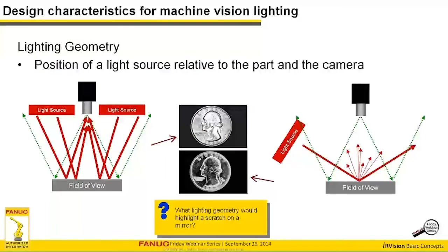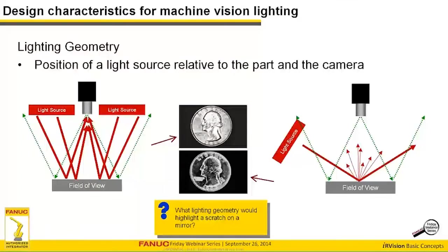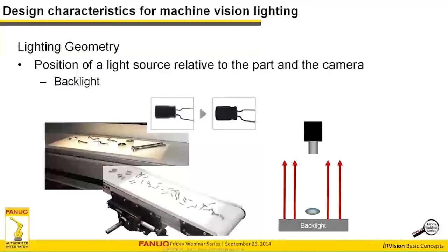Quick question: what lighting geometry would highlight a scratch on a mirror or piece of glass? A low-angle dark field illuminator does a great job of highlighting scratches while eliminating other features on highly specular surfaces like glass mirrors or shiny metal. If you know how to achieve this kind of illumination, what sounds like a difficult application turns out to be really easy.